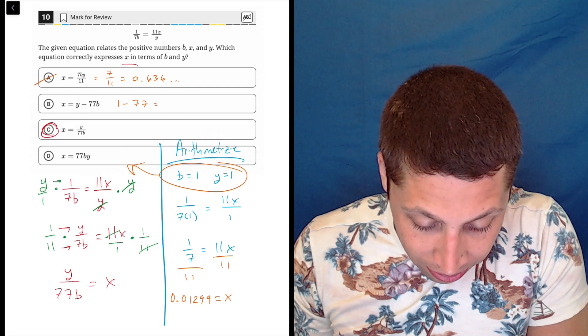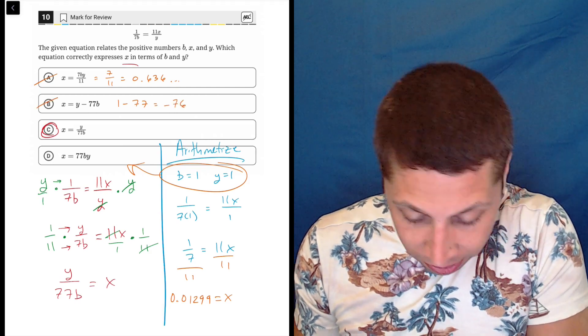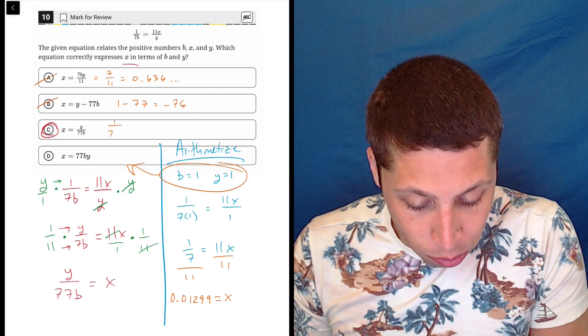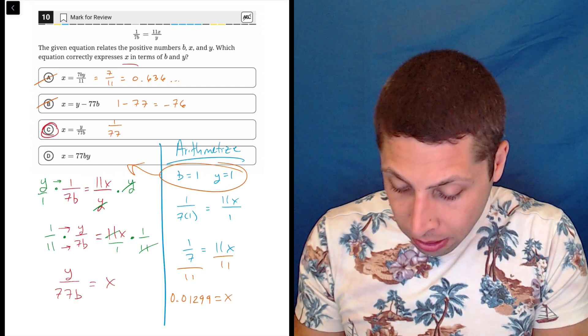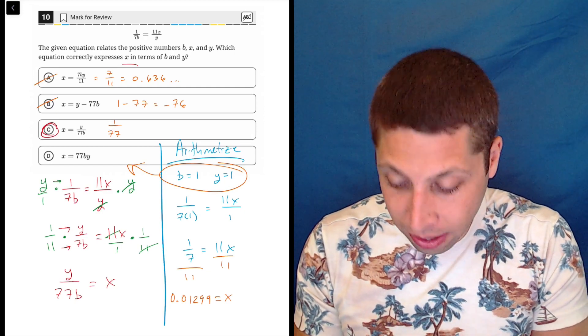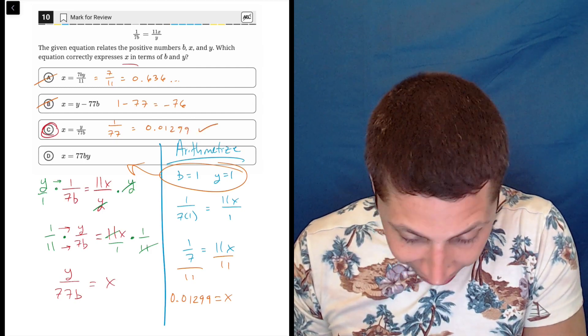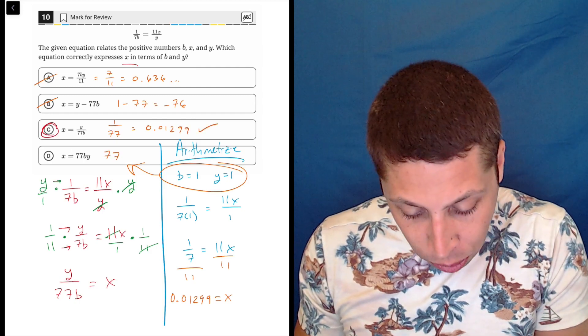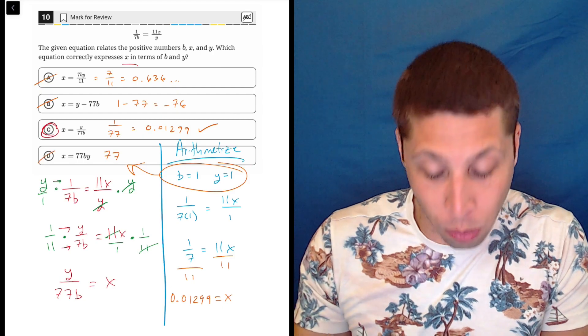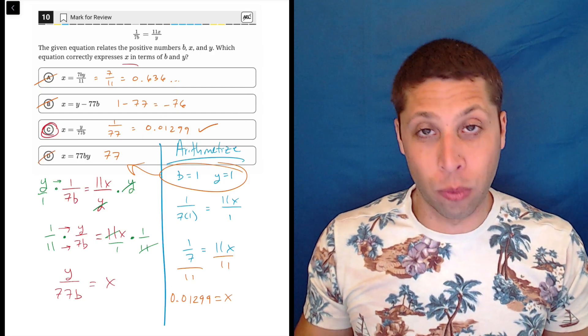This would be one minus 77, that's negative 76, so nope, that's not right. This would be one over 77. One divided by 77 is, unsurprisingly, 0.01299, so that looks good, and then this would be 77 times one times one, which is 77, so that doesn't work.